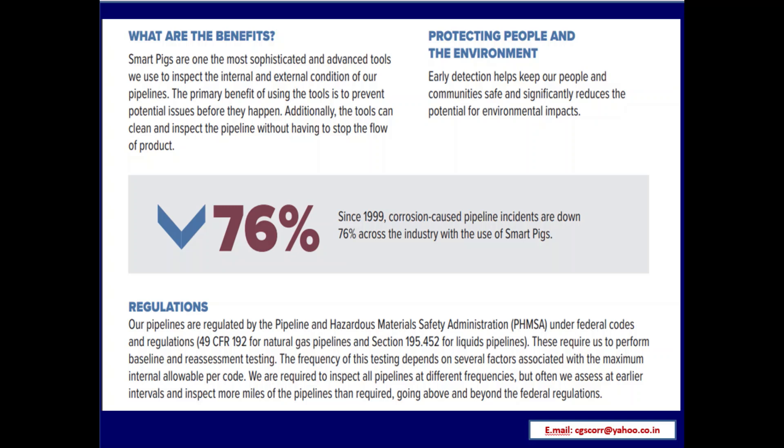Benefits of smart pigs: they are among the most sophisticated tools used to inspect the internal and external conditions of pipelines. The primary benefit is preventing potential issues before they happen. Additionally, the tools can clean and inspect the pipeline without stopping the flow of product. Smart pigs protect people and the environment through early detection, keeping communities safe and reducing environmental impacts. Since 1999, corrosion-caused pipeline incidents are down 76% across the industry with the use of smart pigs.